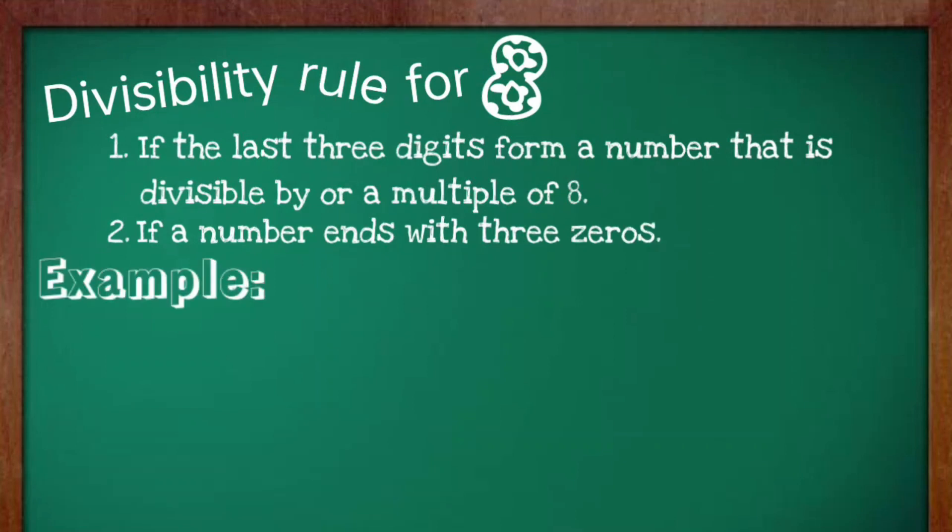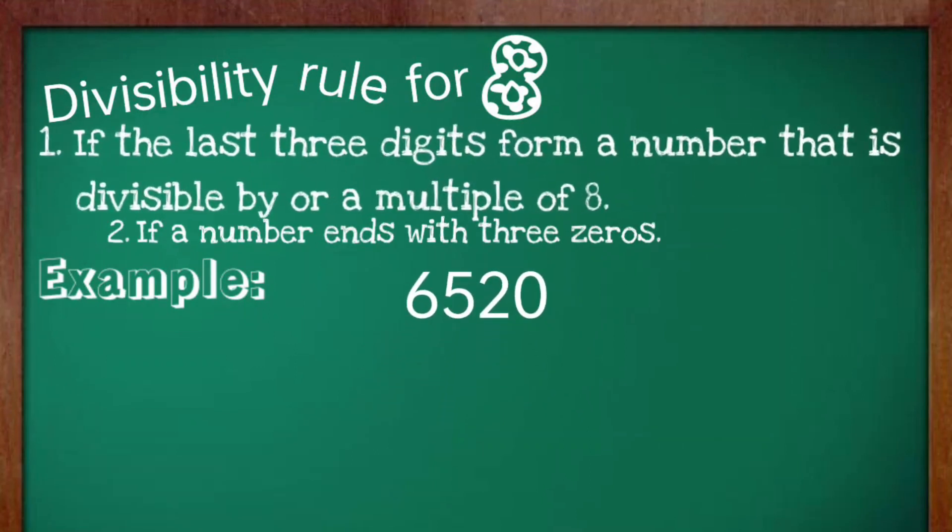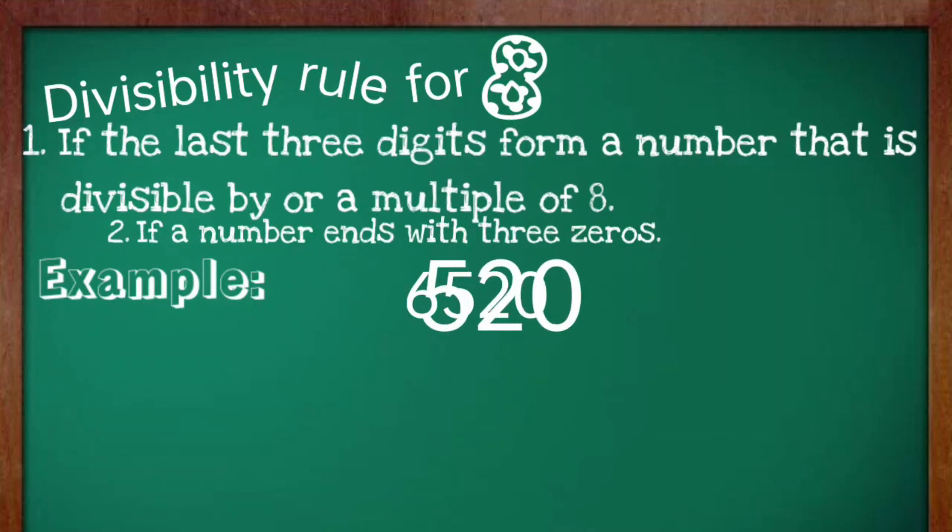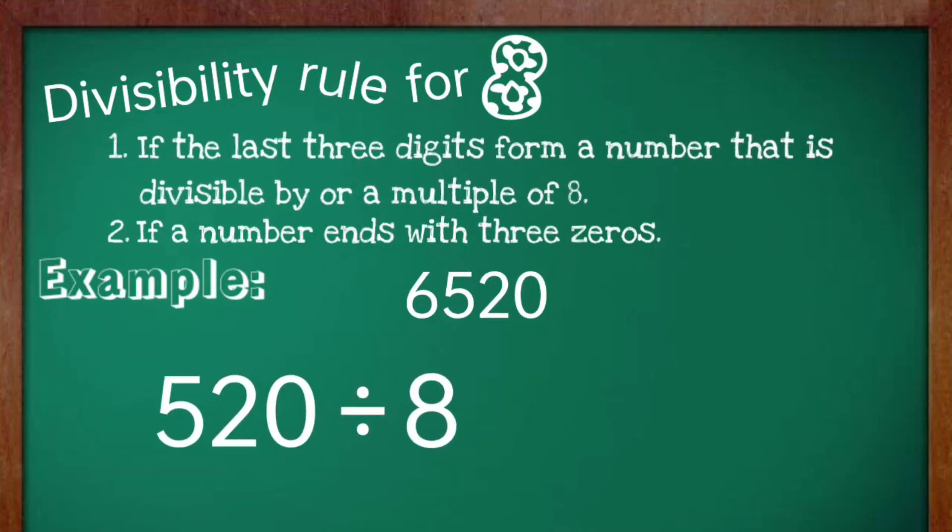Let's try these examples. We have 6,520. Now, let's apply the first rule. Take the last three digits and divide it by 8. 520 divided by 8 is equal to 65.